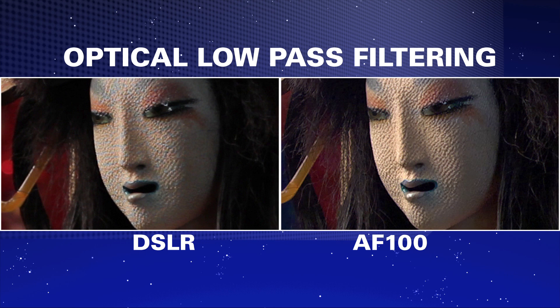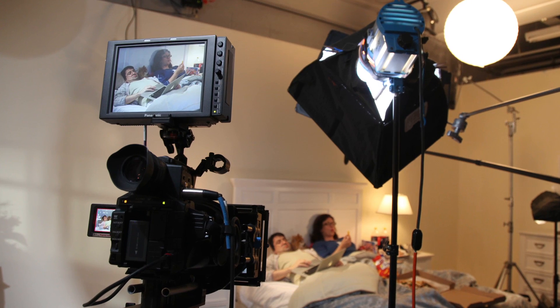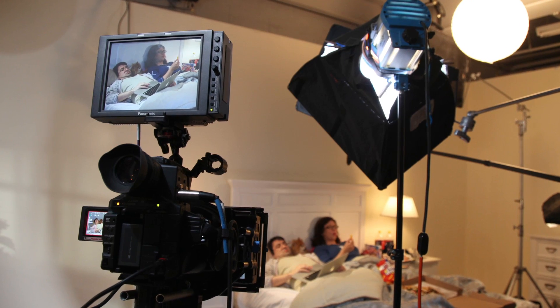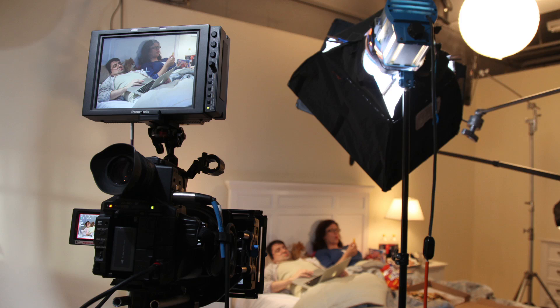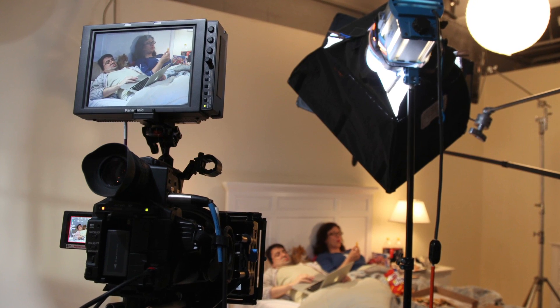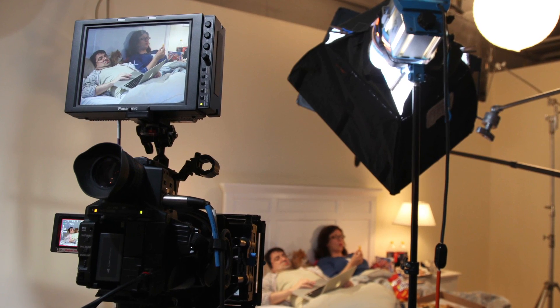Some of the liabilities found in DSLRs have been designed out of the AG AF100. Starting with an optical low-pass filter, it gets us past the moiré and aliasing that occurred within the DSLR body. Once past that, we have the ability to have HD output during record, so you can monitor in high definition while recording and actually tell what you're shooting at the time of record.